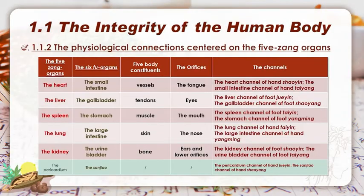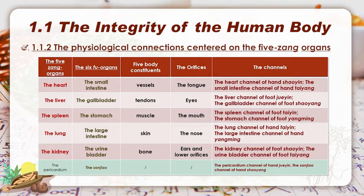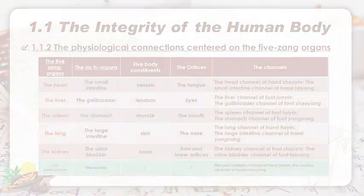The general connection is demonstrated in the form. Let us take the heart as an example. The heart and small intestine build up an interior-exterior relationship. The heart governs the vessels of the whole body and opens into the tongue. There are two main channels named the heart channel of hand shao yin and the small intestine channel of hand shao yin that serve as the contact system. Since they are physiologically connected, in pathological conditions there are mutual interactions for certain.